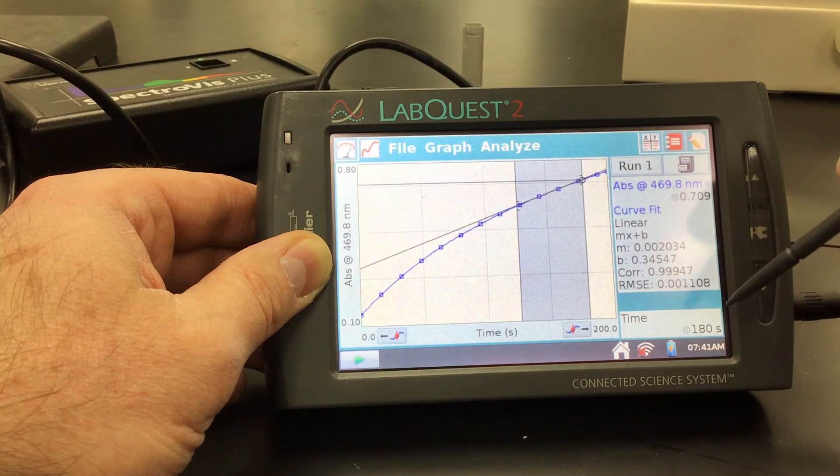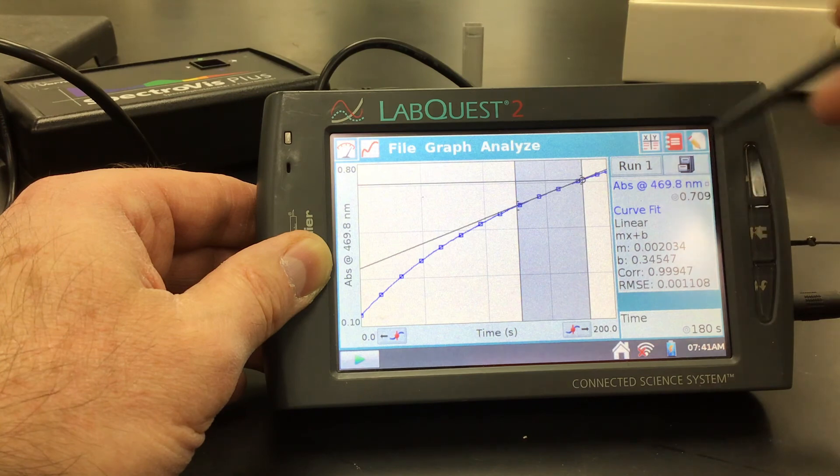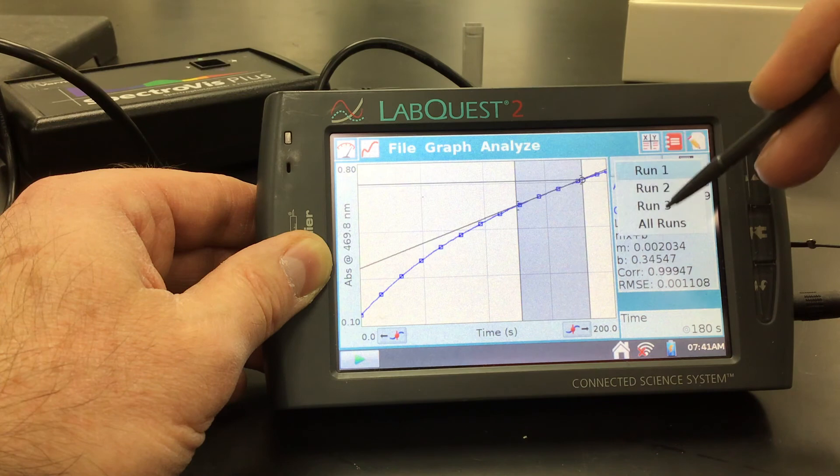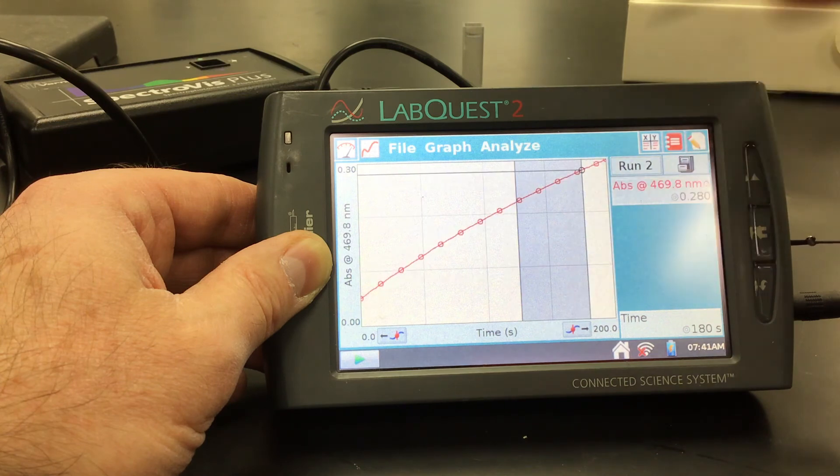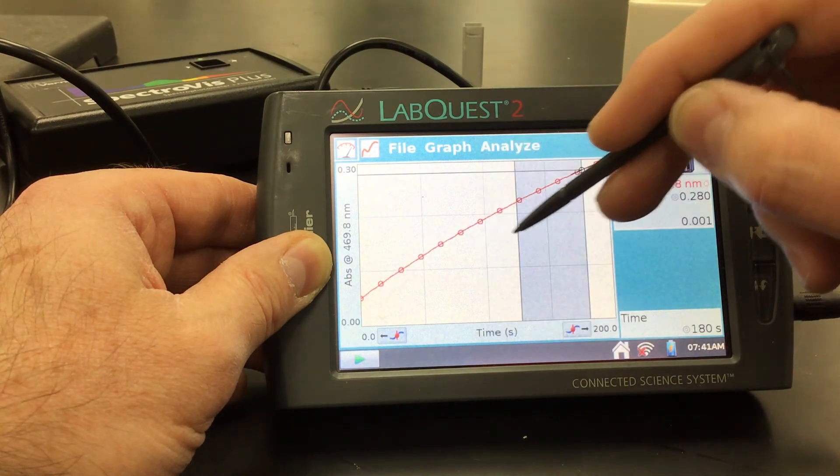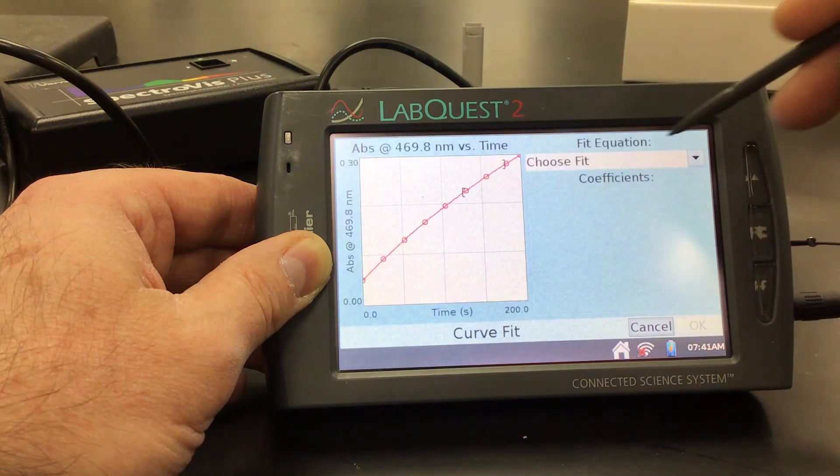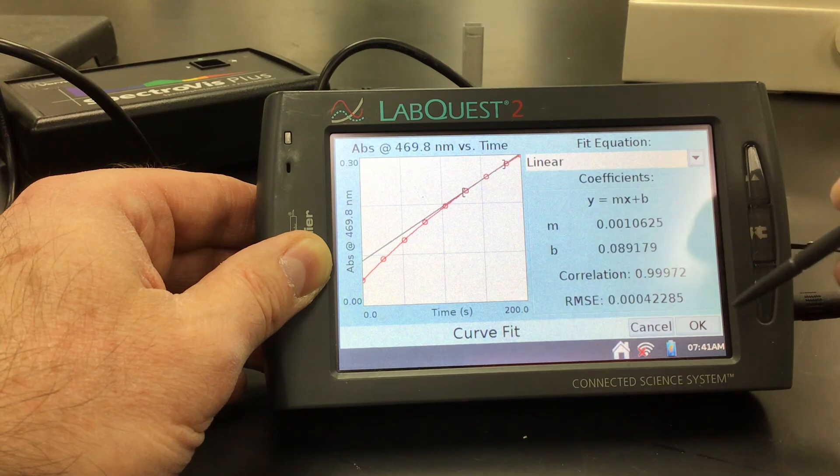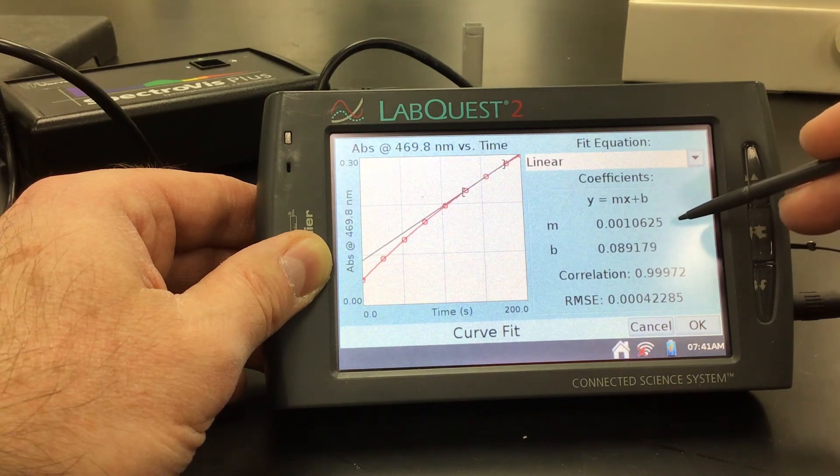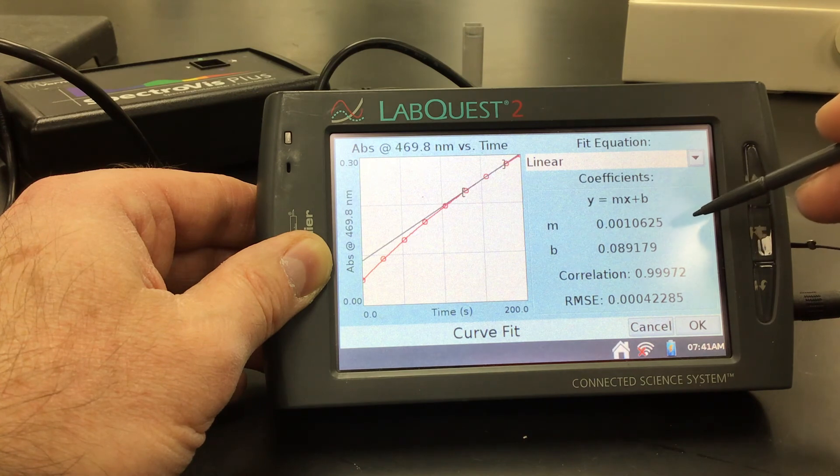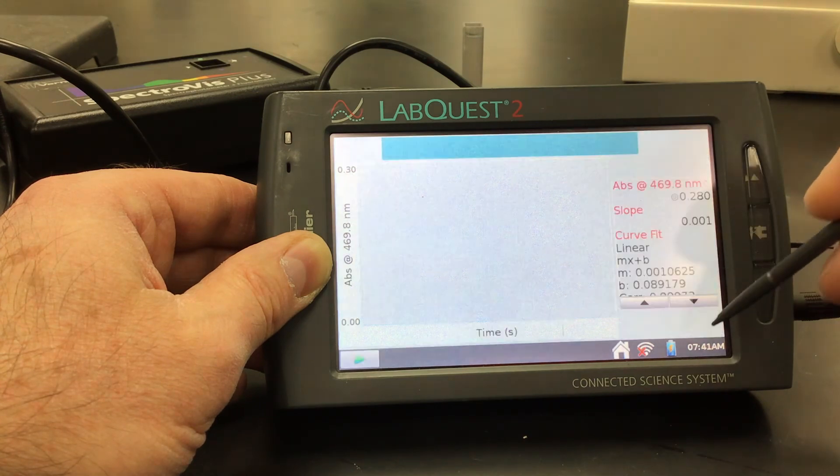All right. So that's one that we want to record. The lab quest saves it for us. If we look at run two, we also want to do that same thing where we do a linear fit. So let's do a curve fit of that and make it linear. And we want to record that value as our slope of our second run, which is our initial rate. All right. So 0.0010625. Okay.